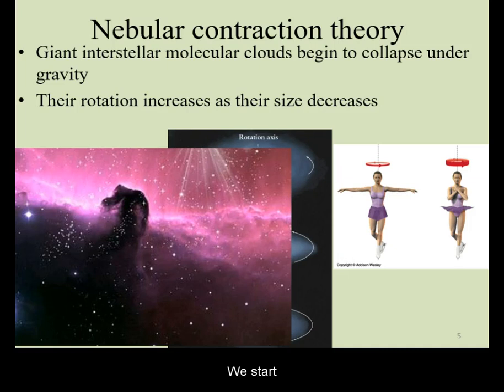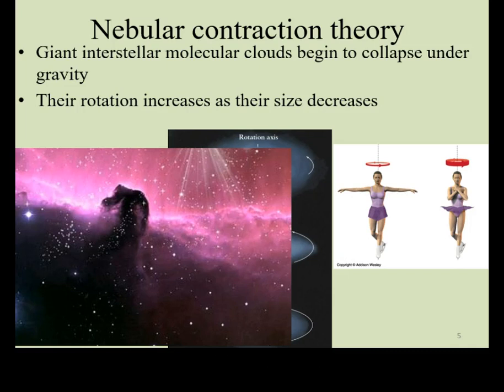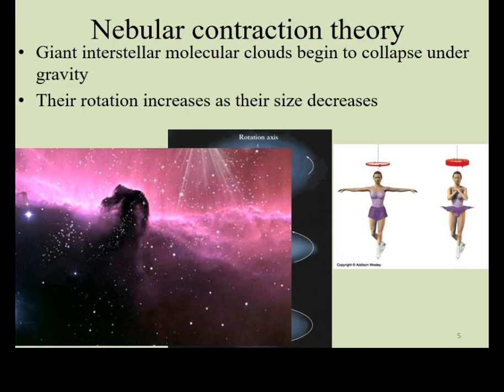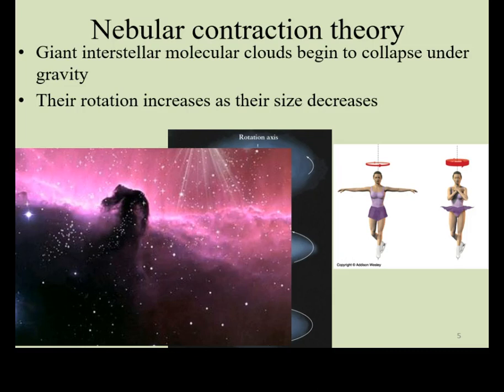We start with a giant interstellar molecular cloud. These are vast clouds measured in dozens to hundreds of light years across, made mostly of hydrogen and helium, but also some condensed matter — molecules of compounds and dust.